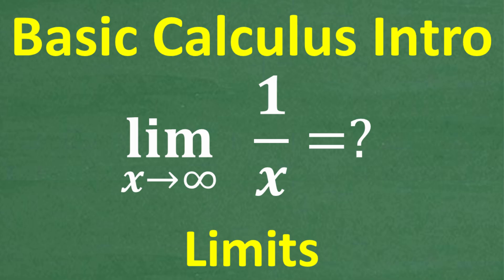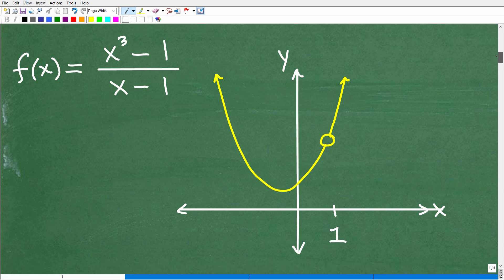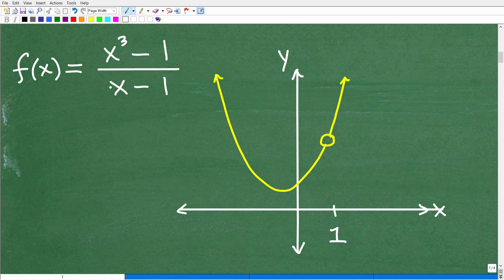This is pretty crazy looking notation. What does this mean? Let's take a look at an example problem to try to introduce you to this concept of limits. I'm going to explain something here, and hopefully you have some basic algebra knowledge — maybe like Algebra 1 knowledge. So what we're looking at here is what we call a function. What I've done is graph this function, so this is more or less the graph of this function.